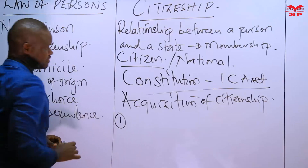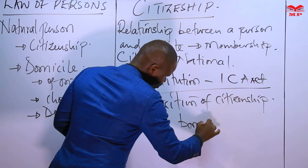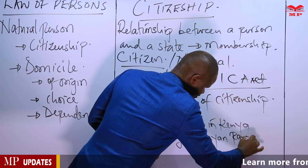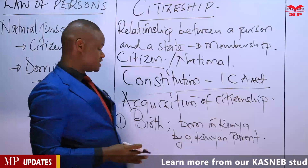The first method by which you could become a Kenyan is by birth. Citizenship by birth will be acquired by all persons born in Kenya by a Kenyan parent. So if you happen to have been born in Kenya, whether your father or your mother or both of them are citizens of Kenya, then that automatically guarantees you Kenyan citizenship by birth.